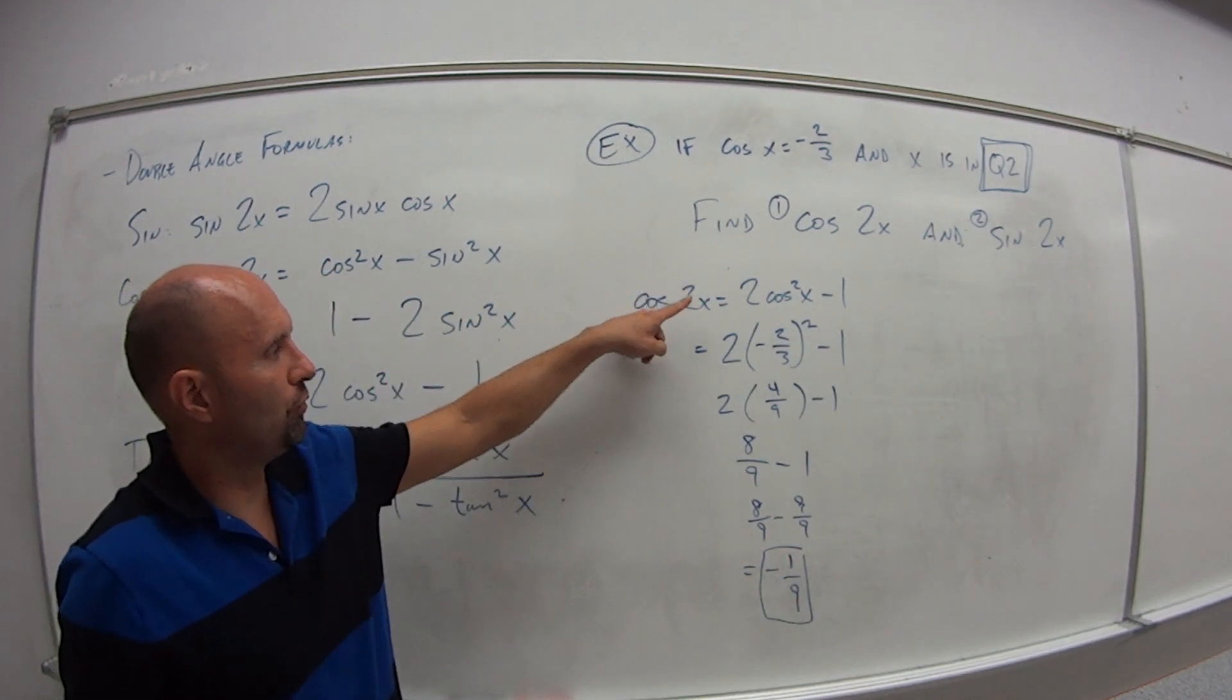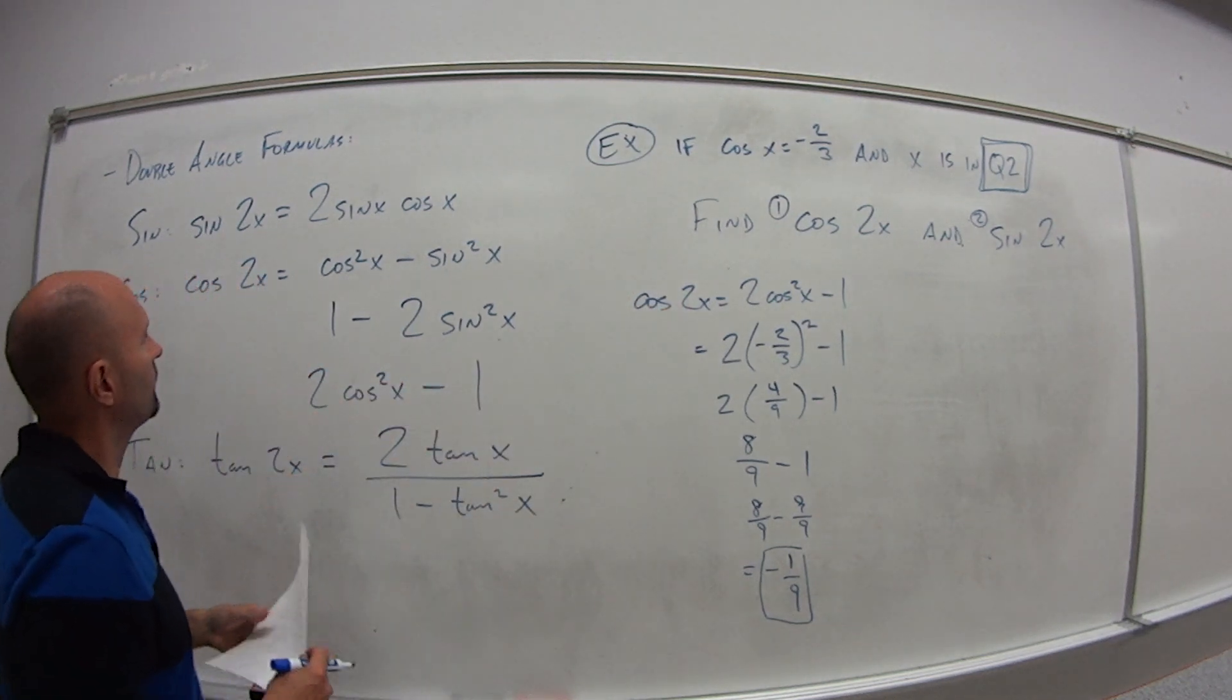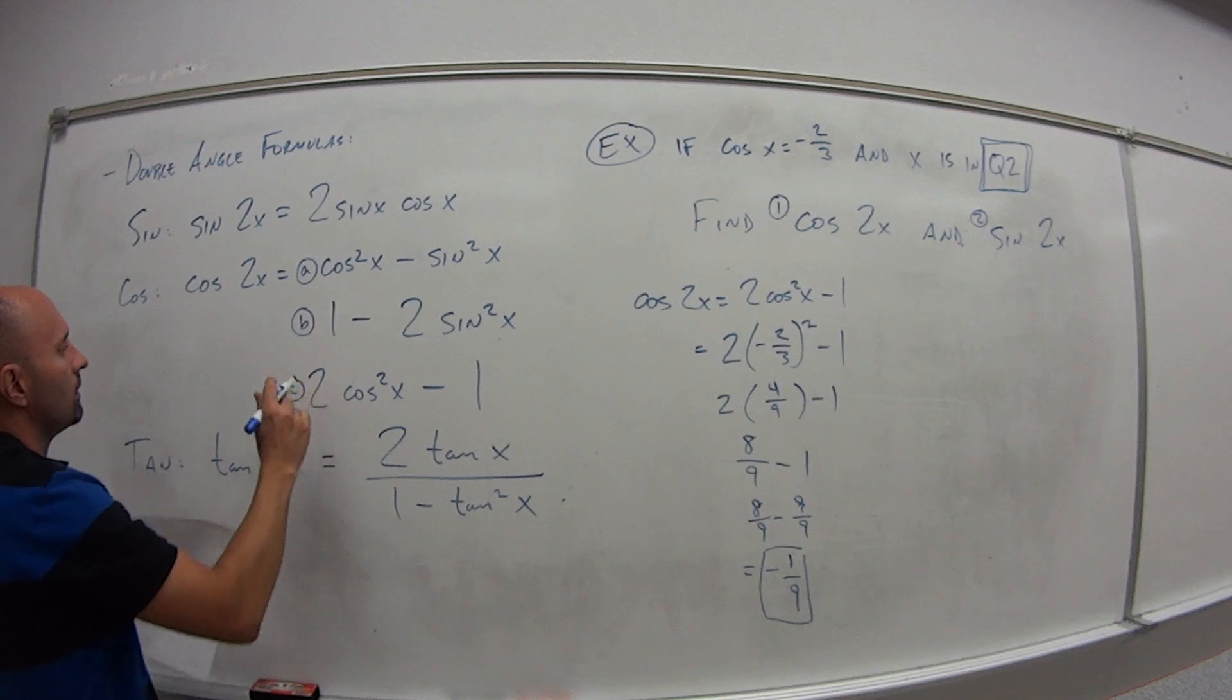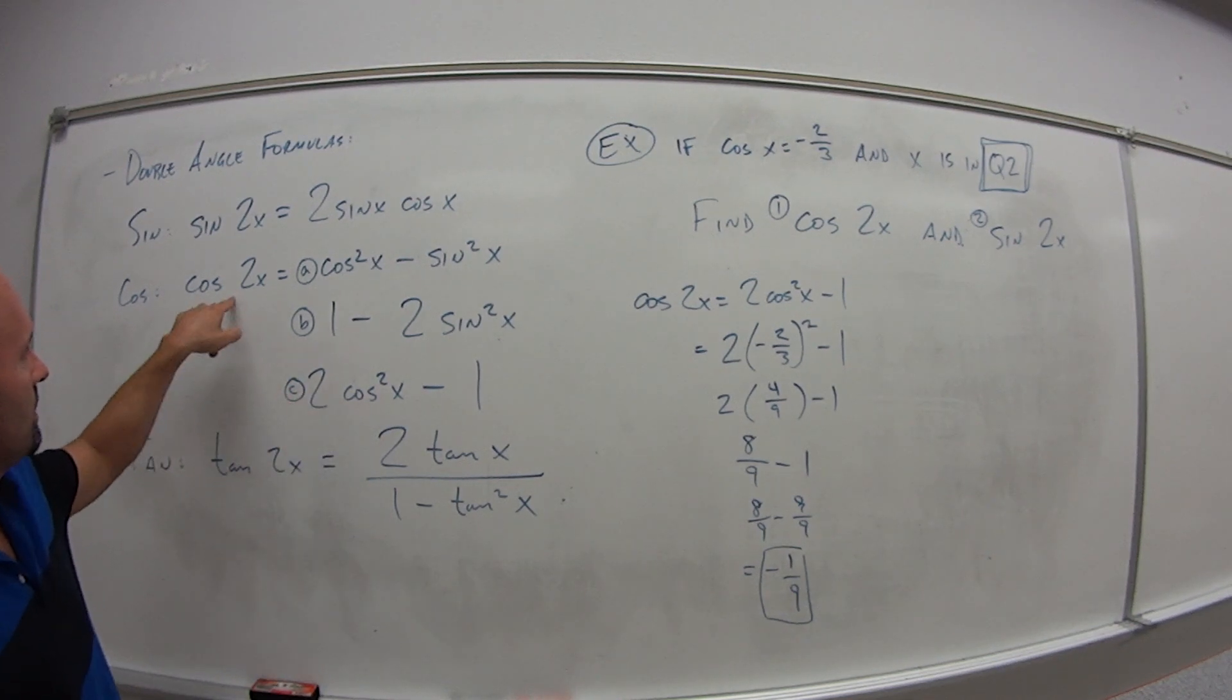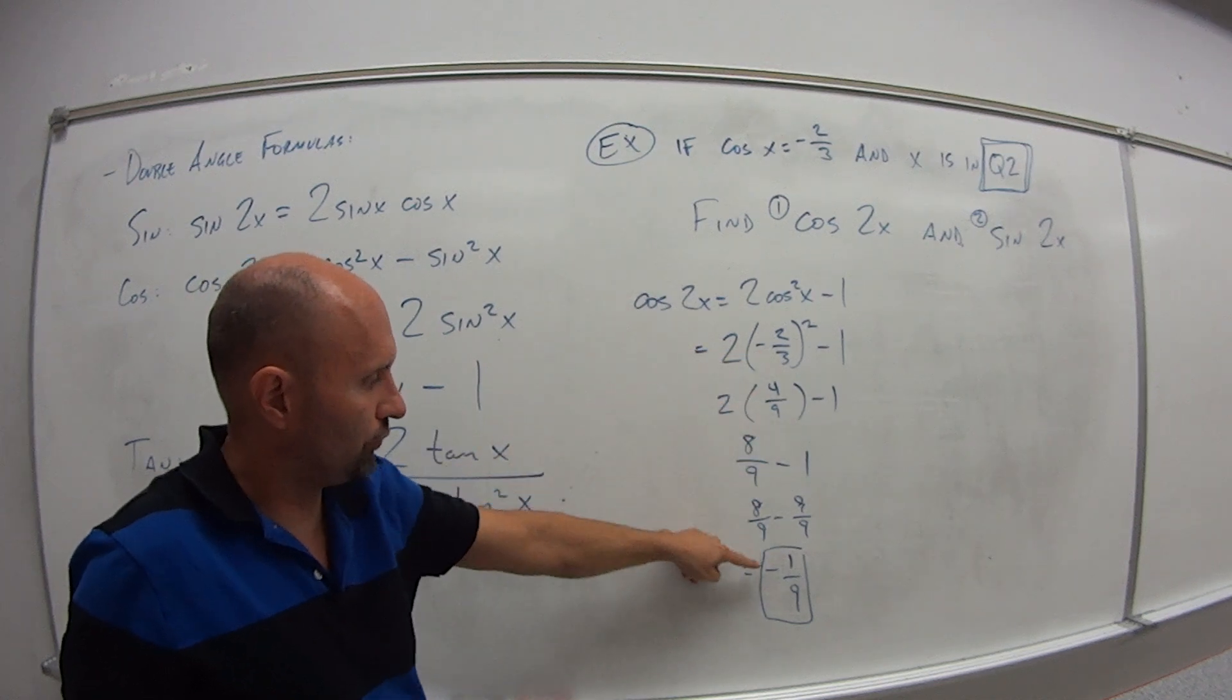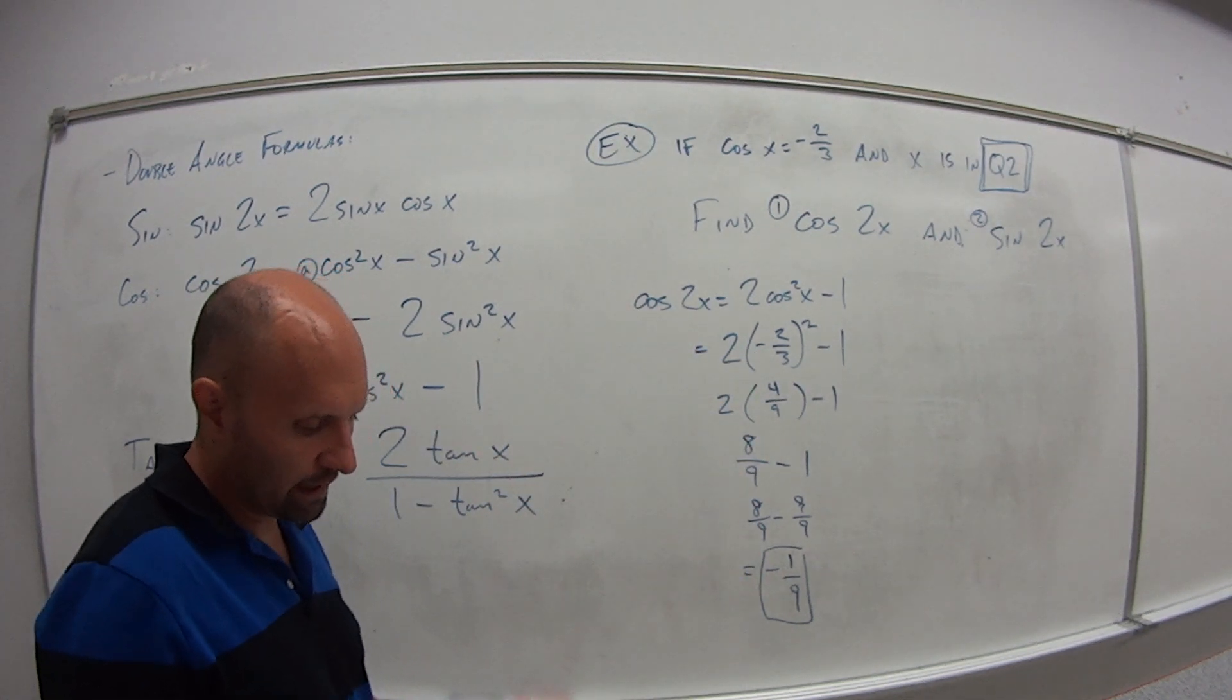So cosine of 2x, let's call this ABC. Using formula C for cosine of 2x I plug in my minus 2/3, do my calculations, end up with negative 1/9.